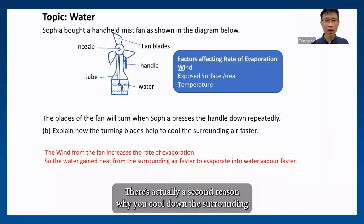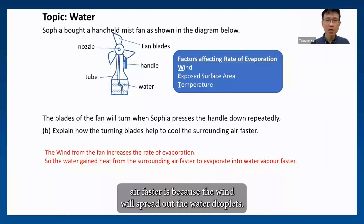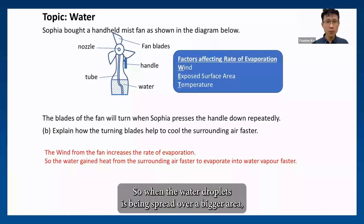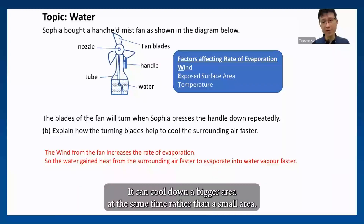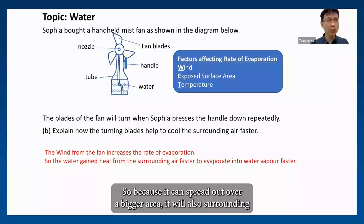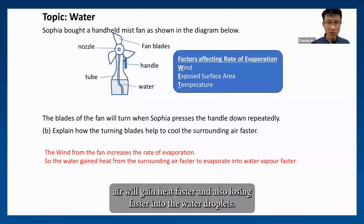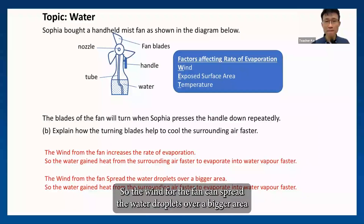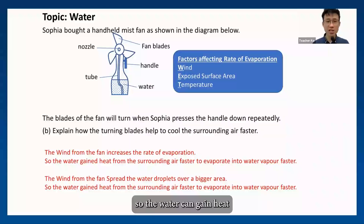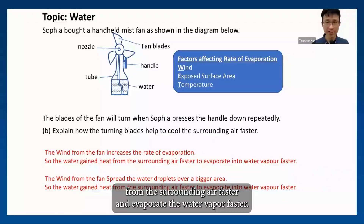There is actually a second reason why the fan cools the surrounding air faster — the wind will spread out the water droplets. When the water droplets are spread over a bigger area, they gain heat faster and it is more effective. It can cool down a bigger area at the same time rather than a small area. So the wind from the fan spreads the water droplets over a bigger area, so the water can gain heat from the surrounding air faster and evaporate into water vapor faster.